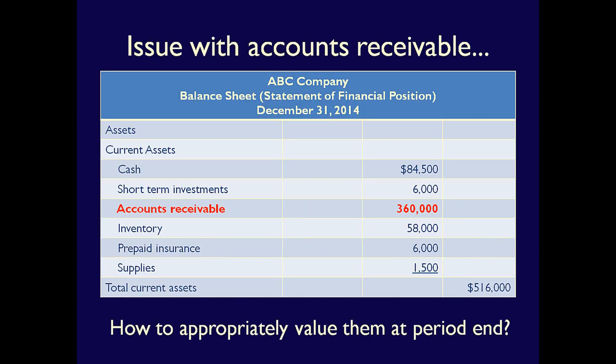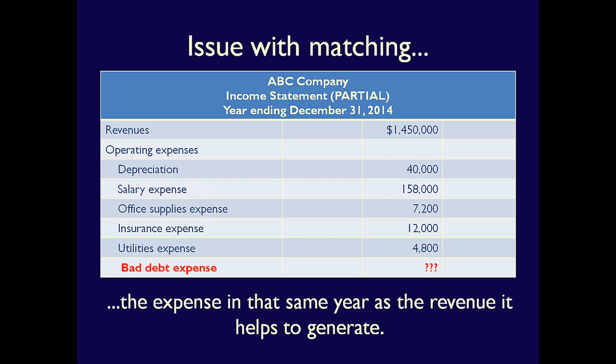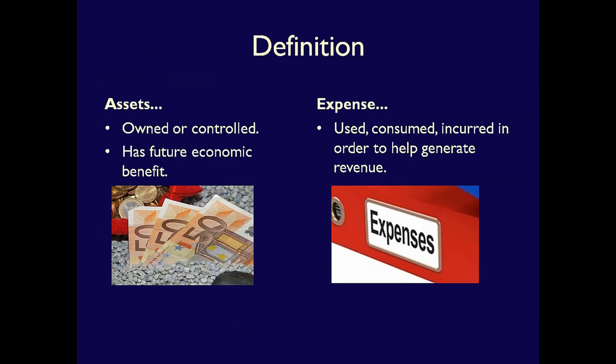I asked what method can we use so our assets are appropriately valued in 2014 and we record our bad debt expense in 2014, the same year as the related revenue. That would allow us to follow the definition of both the element assets, which need to be valued at their future economic benefit, and the element expense, which have to be recorded in the same period as the related revenue. I called it the allowance method. Let's look at how it works.